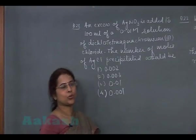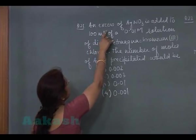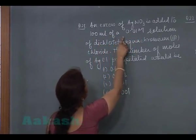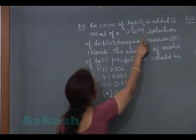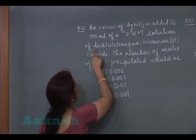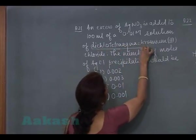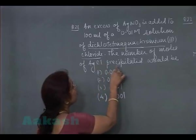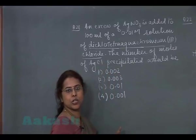Now see the question number 21. An excess of AgNO3 is added to 100 milliliter of 0.01 molar solution of dichlorotetraequa chromium 3 chloride. The number of moles of AgCl precipitated would be.